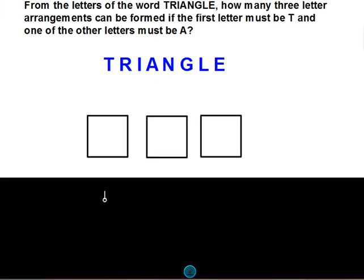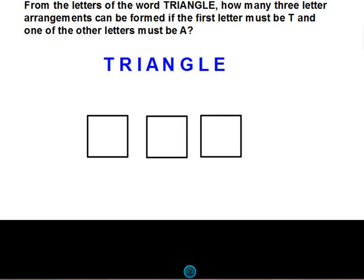So in this, we want to think of this as like the license plate or the telephone number problem, and that you've got three different events that you need to fill. Well, we're told that the first, we only have one way to do this first letter. We're told that we have to use the letter T, so there's only one way to do that.